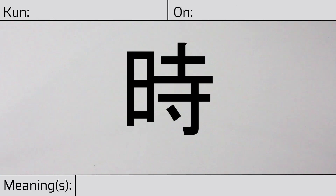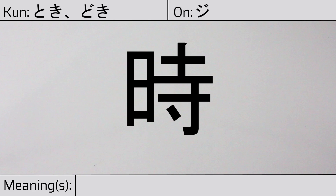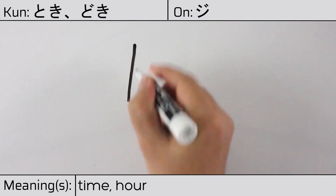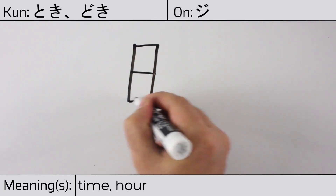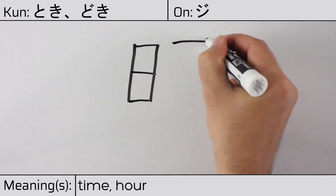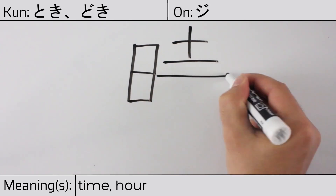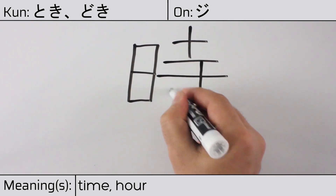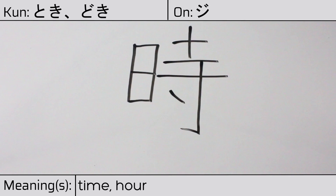Welcome to this lesson on Japanese kanji. Today, we'll be discussing this character. This kanji has kunyomi or Japanese readings of toki or doki, and it has an onyomi or Chinese reading of ji. This kanji has the meanings time or hour. Here is the stroke order. This character is made up of the following radicals or parts.